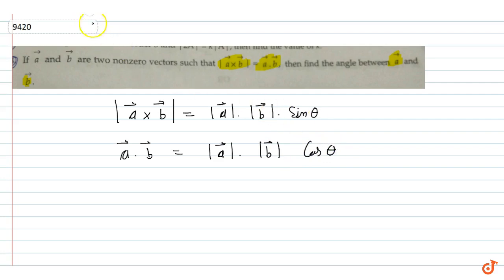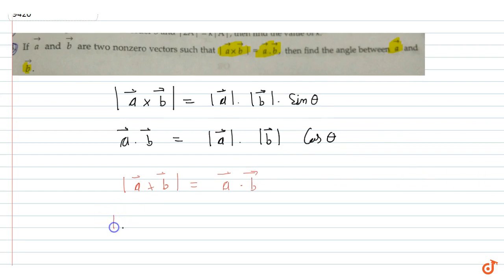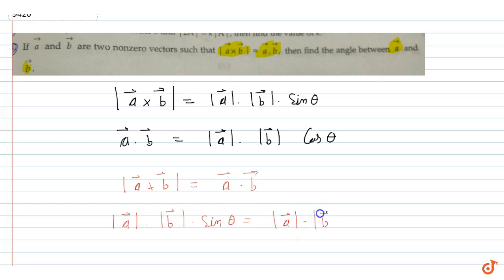These two things are given to be equal. So mode of a vector cross b vector is equal to a vector dot b vector. Putting the values: mode of a vector into mode of b vector into sin theta is equal to mode of a vector into mode of b vector into cos theta.